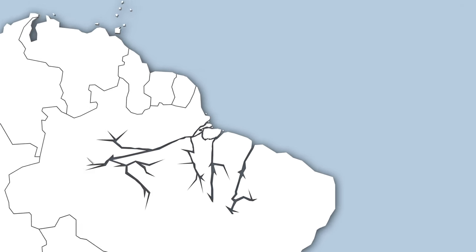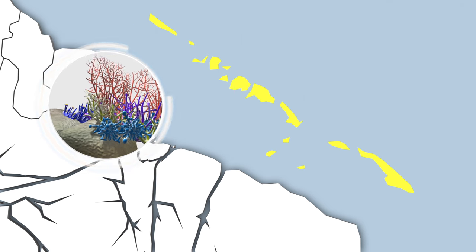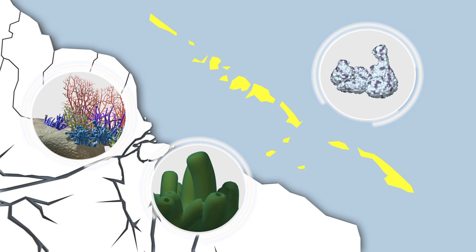The 600-mile-long newly discovered coral reef stretches from French Guinea to Marinal State, Brazil. The reef types include carbonate structures as well as rotoliths and sponges.